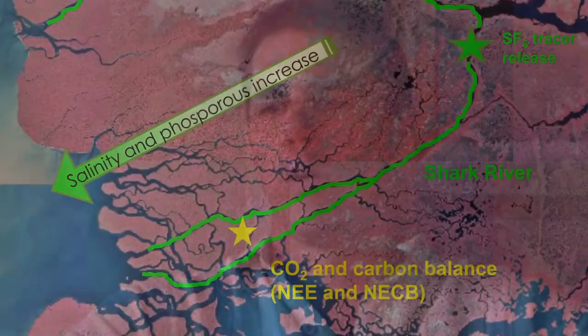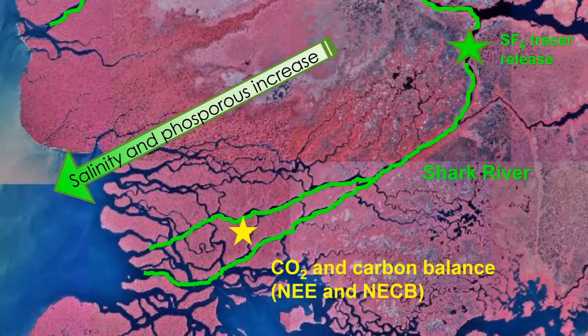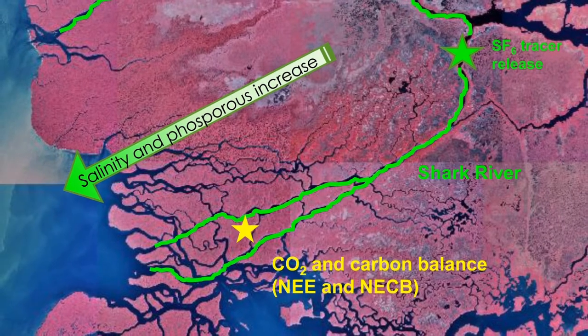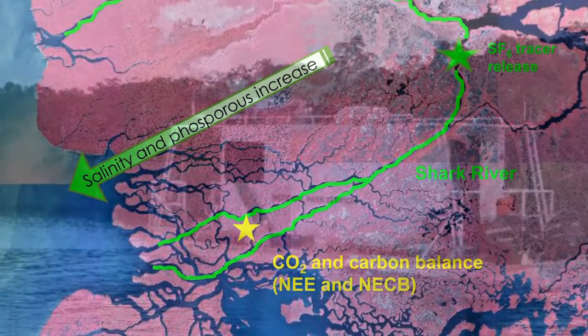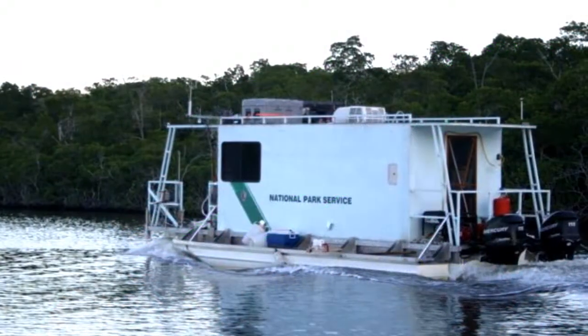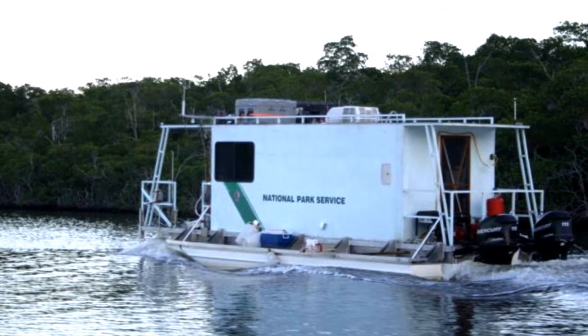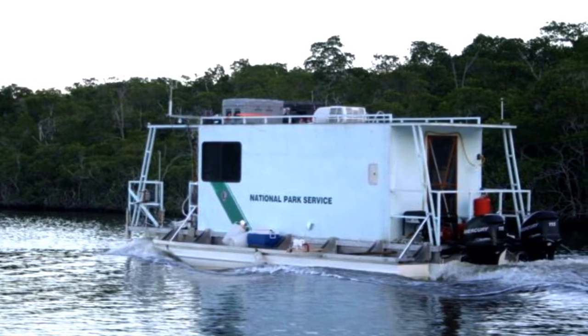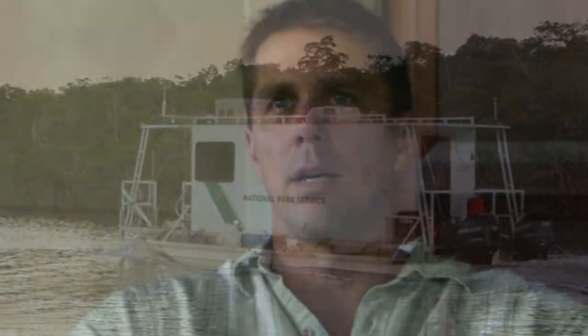The tracer experiment was a new experiment where we labeled some water. We used an inert tracer called sulfur hexafluoride — it's a gas and we bubble it into the water. It has a very low detection limit; we can find that gas in the water at something like 10 to the minus 15 moles per liter, which is a very, very small number.